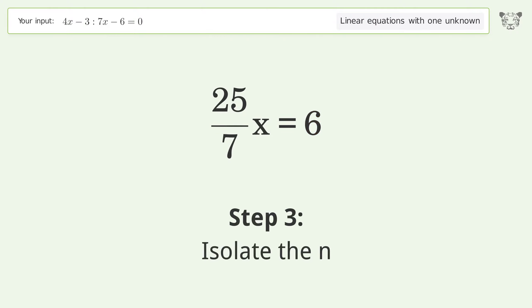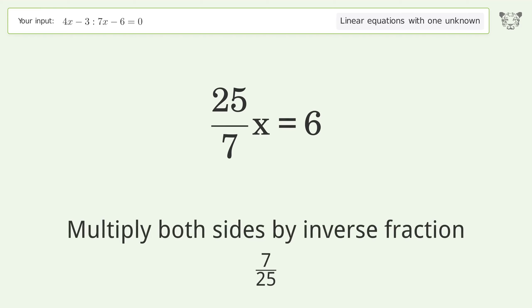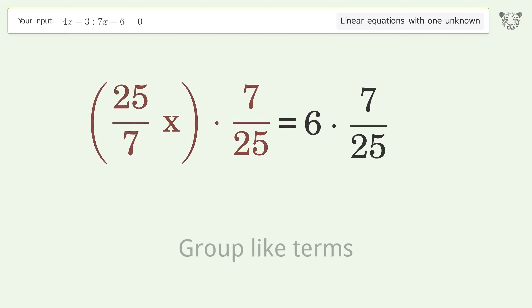Isolate the x. Multiply both sides by inverse fraction 7 over 25. Group like terms.